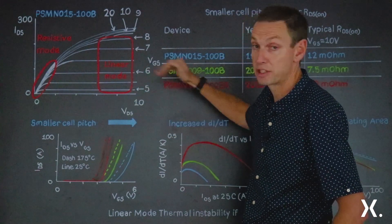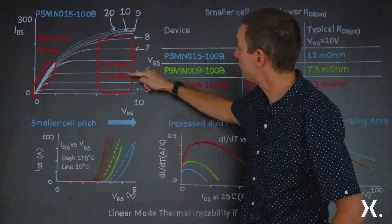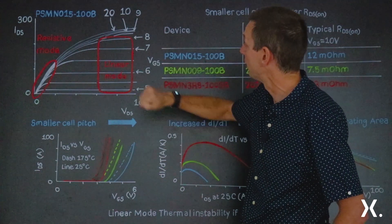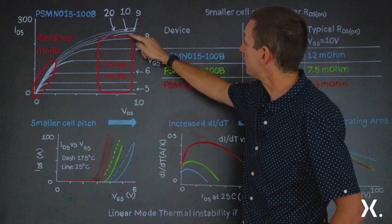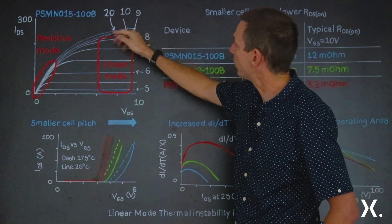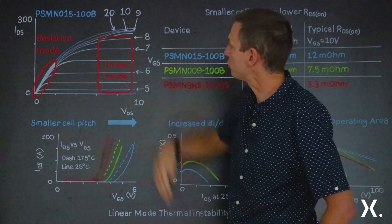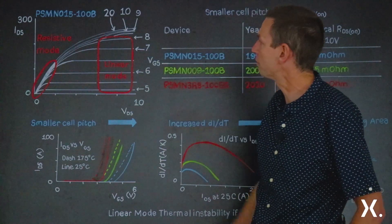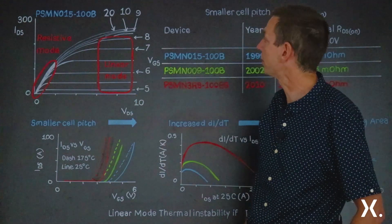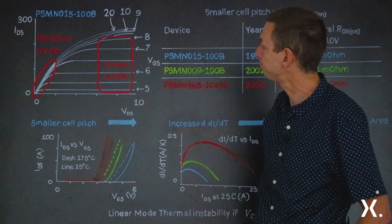As we increase the bias to 6 volts we get an increased current; 7 volts, we get more current, and then 8, 9, 10. By 9, 10, and 20 volts you can see that we don't actually get much more current out of the MOSFET. The MOSFET is basically designed to run with a gate bias normally of about 10 volts.